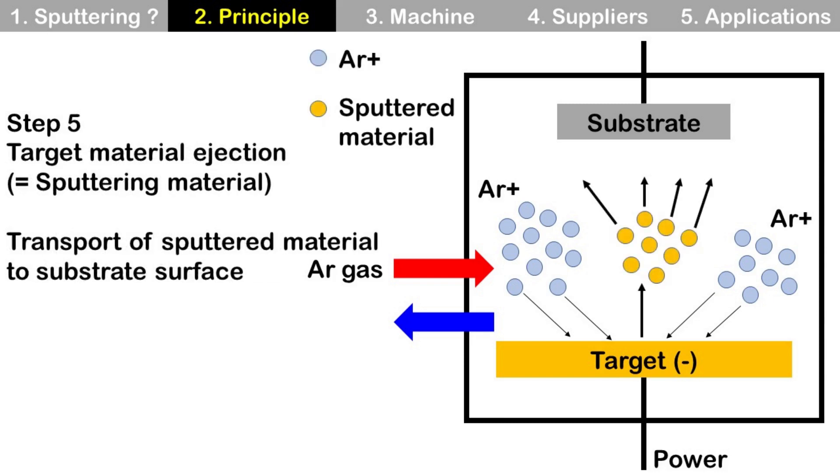Step 5: Target material ejection (sputtering material) and transport of sputtered material to substrate surface. When accelerated argon ions hit the target surface with enough energy, they can eject target material. These ejected target materials move to the substrate.